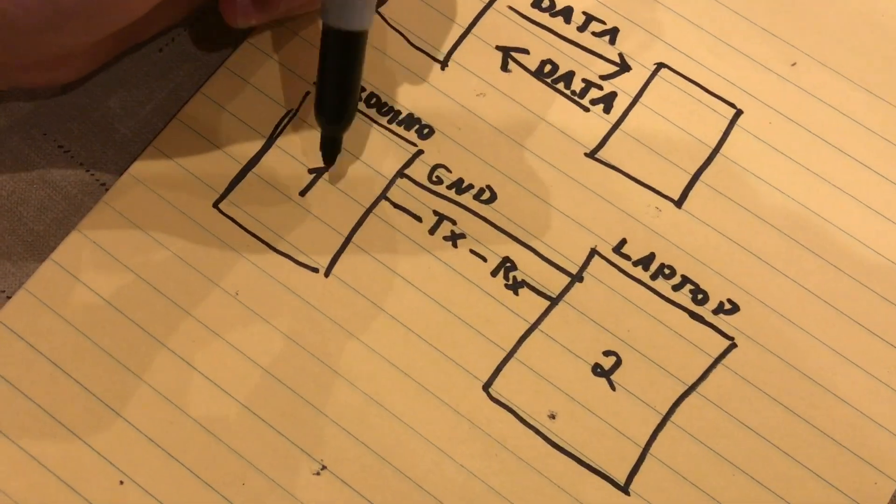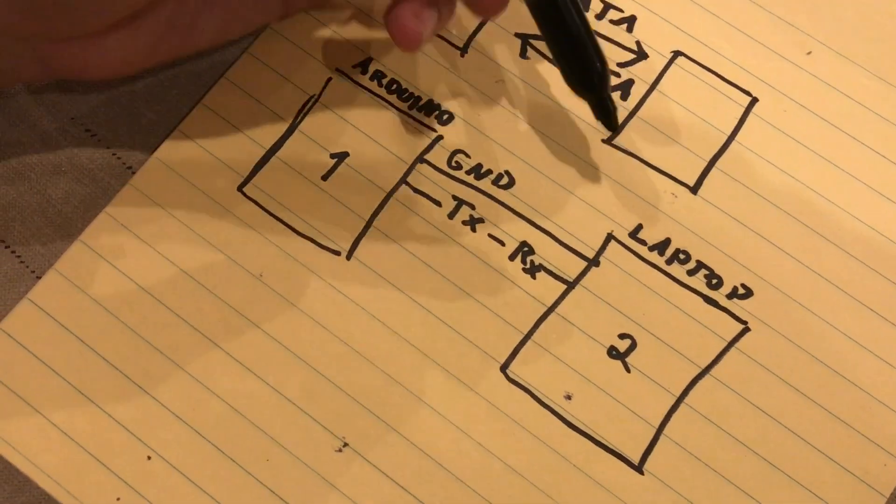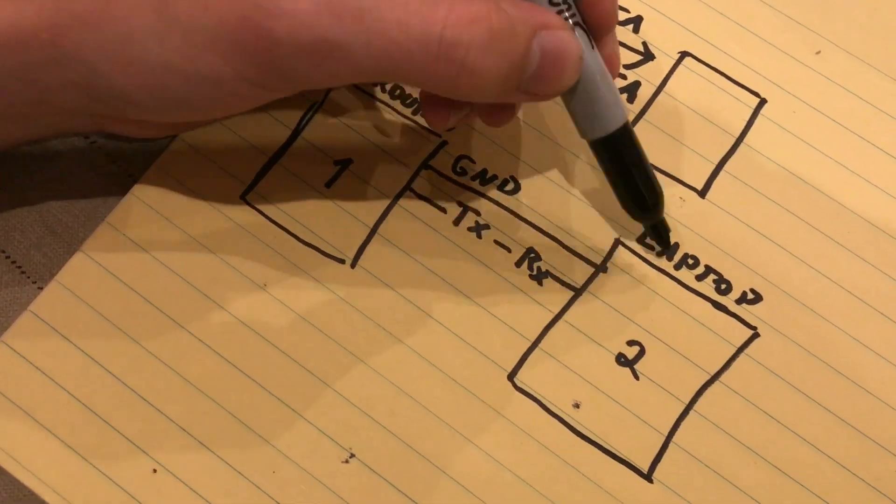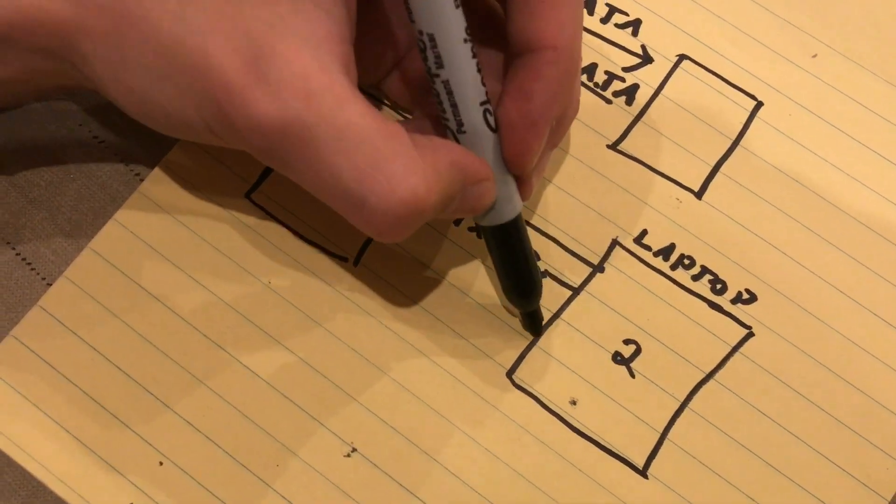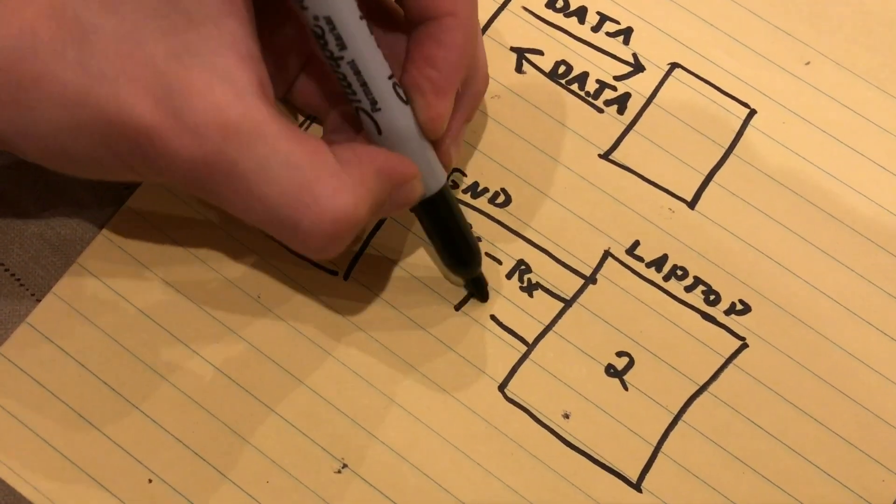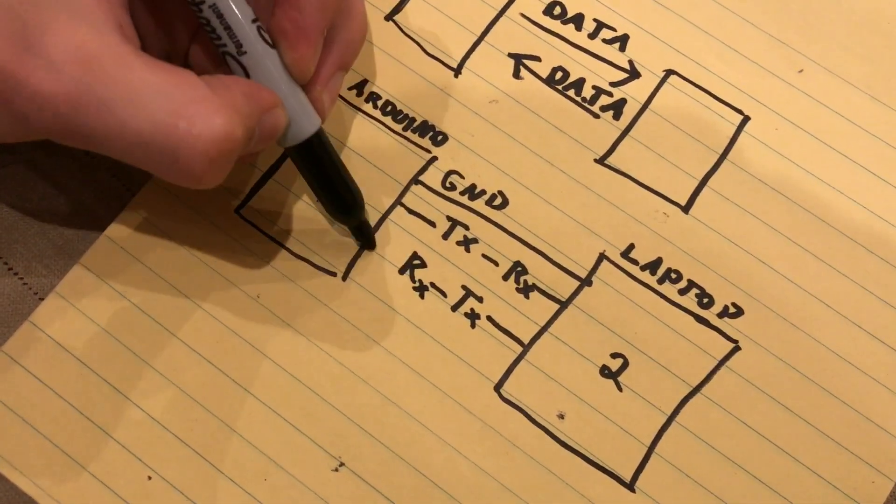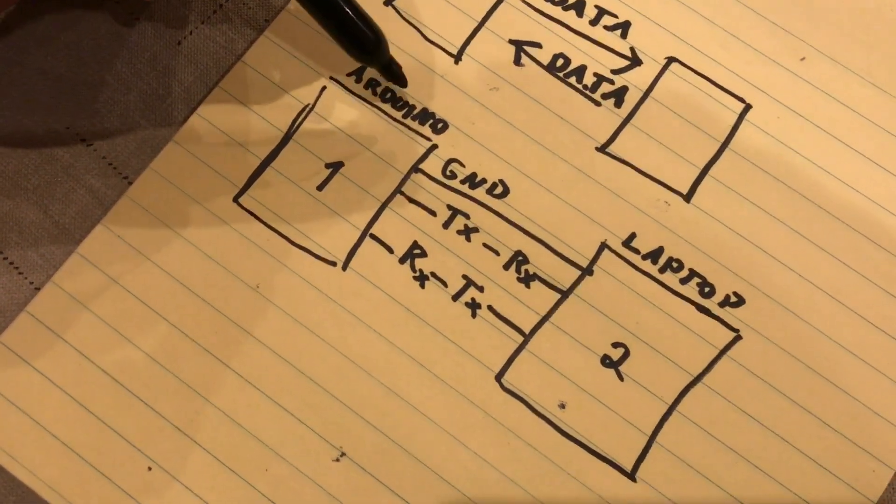Basically, what this means is the pin on the Arduino that's transmitting will be received, that data is received, by the laptop. So, in order for the laptop to send data back, it's the exact same thing, except going the other way. RX, TX to RX on the Arduino.